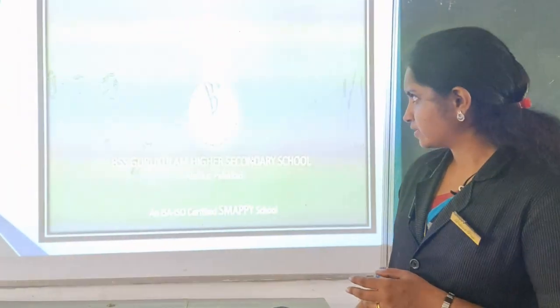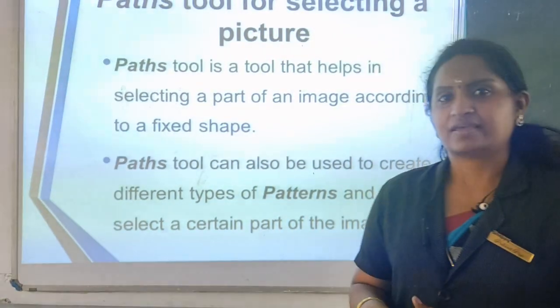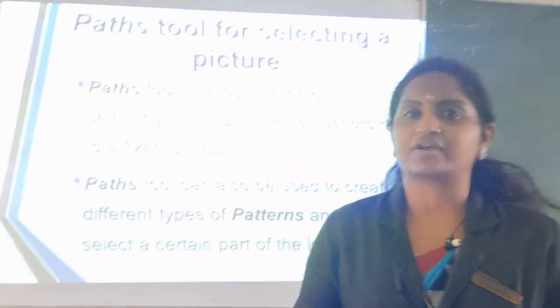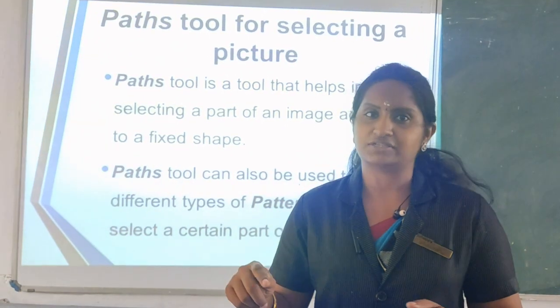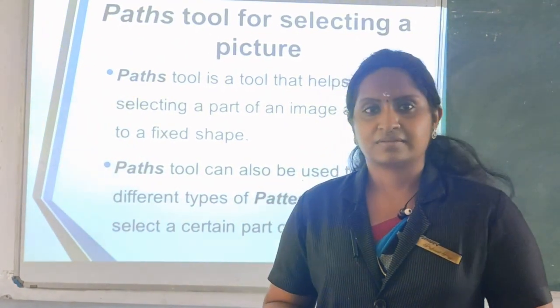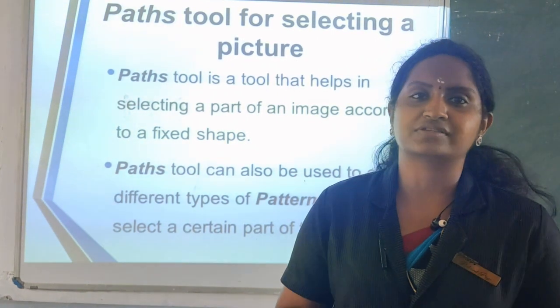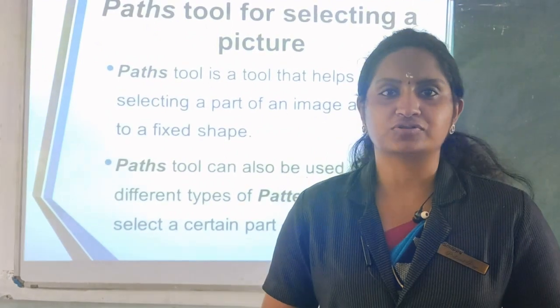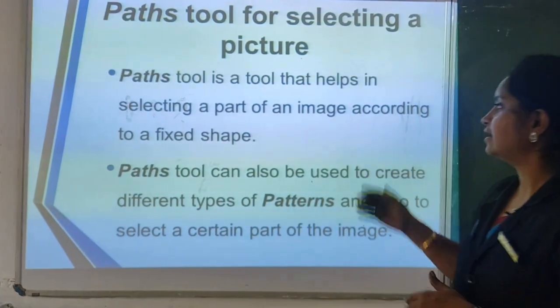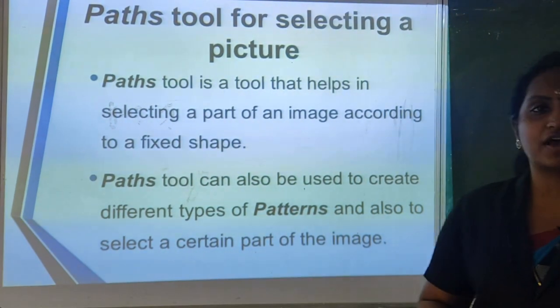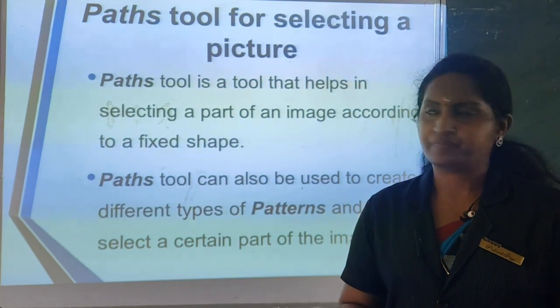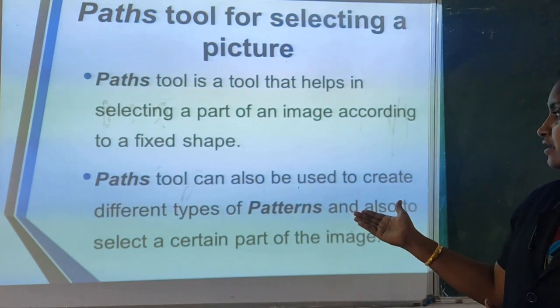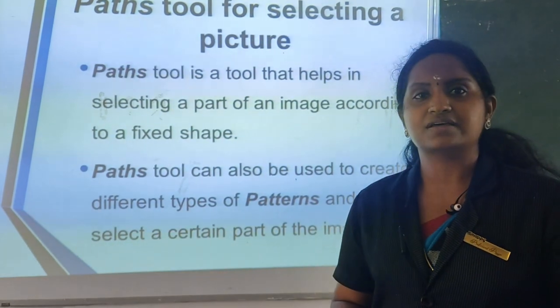Another selection tool you can use in image editing software is the path tool. What is the path tool? By the name, can you identify it? Using the path tool you can select an image according to the size or shape of the image — selecting a particular part of an image. You can select the path of an image according to a pixel shape.